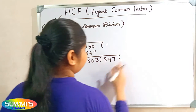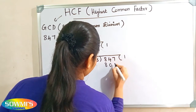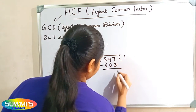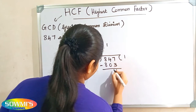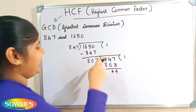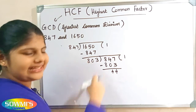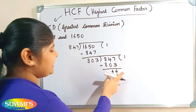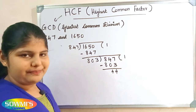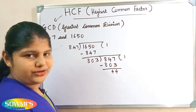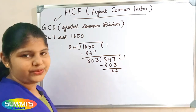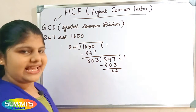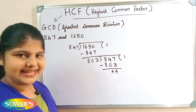Now let us divide 847 by 803. When we divide 847 by 803, our quotient will be 1 and our remainder will be 44. So now we have to repeat the process again — we make the remainder the new divisor and the previous divisor the new dividend. So 44 becomes the new divisor and 803 becomes the new dividend.